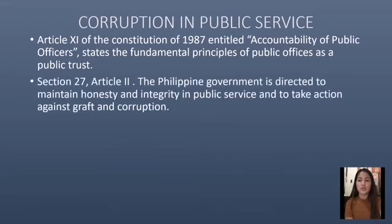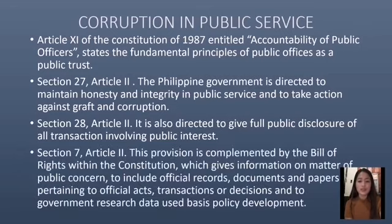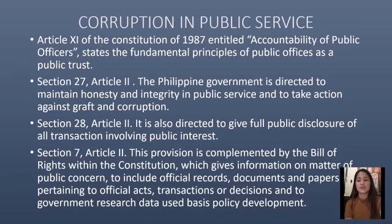Section 27, Article 2: the Philippine government is directed to maintain honesty and integrity in public service and to take action against graft and corruption. Section 28, Article 2: it is also directed to give full public disclosure of all transactions involving public interest. Section 7, Article 2: this provision is complemented by the Bill of Rights, which gives the right to information on matters of public concern, including official records, documents, and papers pertaining to official acts, transactions, or decisions, and government research data used as basis for policy development.